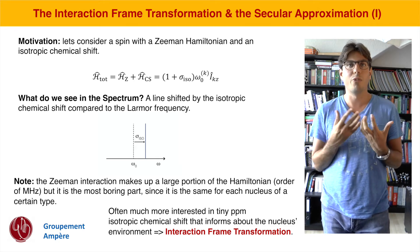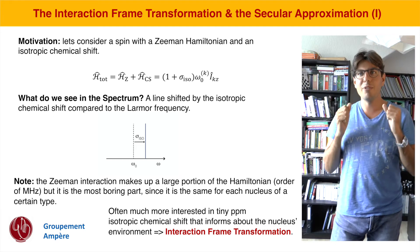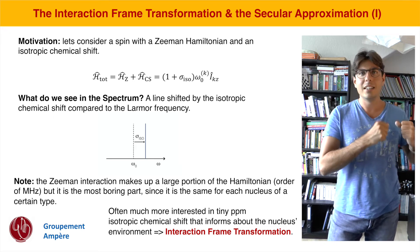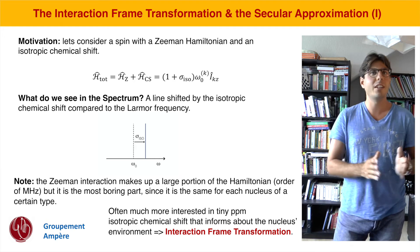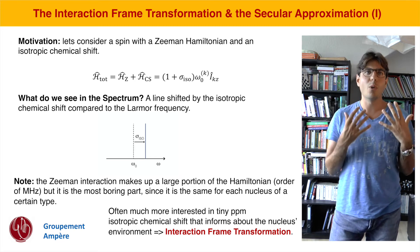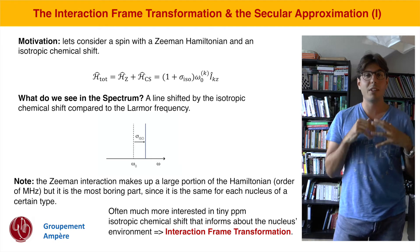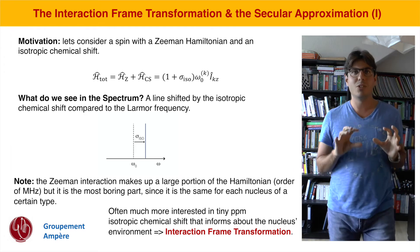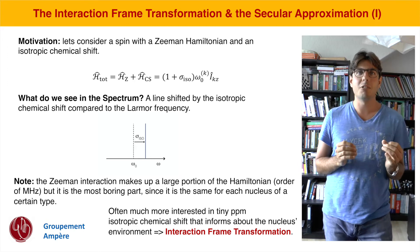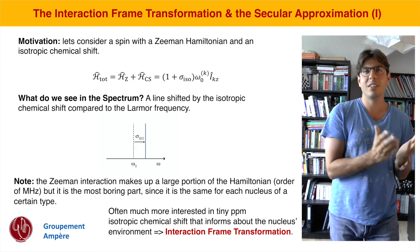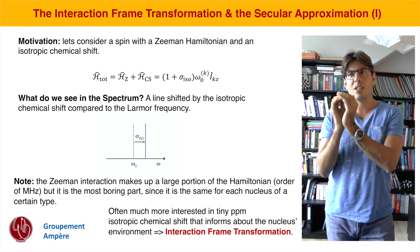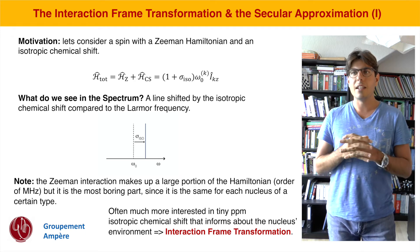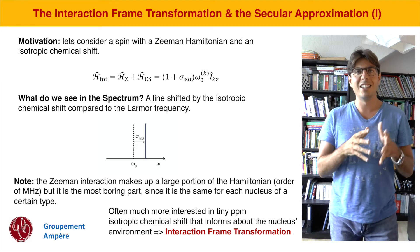This small chemical shift is the part we actually want to focus on in our treatment. The Zeeman interaction is on the order of megahertz, and importantly it only depends on the type of nucleus — so it is the same for all hydrogens in a molecule, for example. One often says the Zeeman interaction is one of the biggest but also one of the most boring parts of the Hamiltonian. This is why, in a theoretical treatment, we want to get rid of the Zeeman interaction so that what remains is the small chemical shift in ppm, which gives us molecular and structural information. To do this we perform an interaction frame transformation.